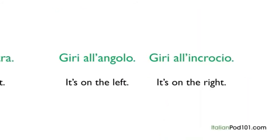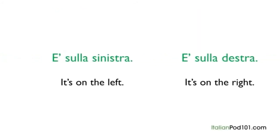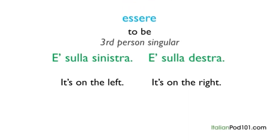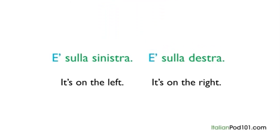In order to say it's on the left or it's on the right in Italian, we should use the verb essere, which means to be, at the third singular person, è, followed by the preposition sulla, meaning on. And finally, sinistra or destra. For example, è sulla destra, è sulla sinistra.